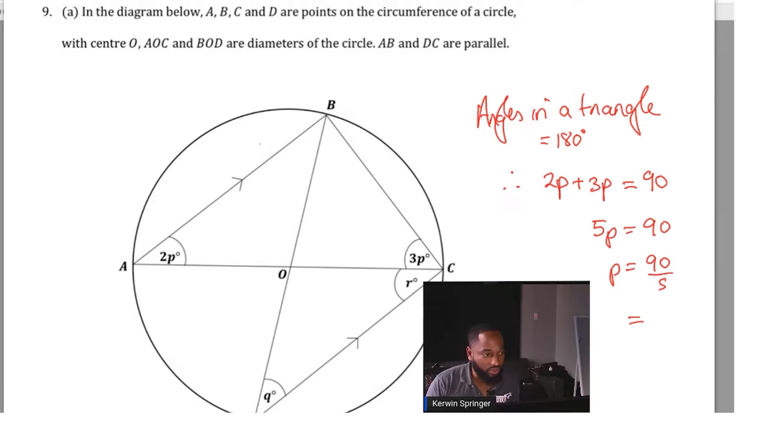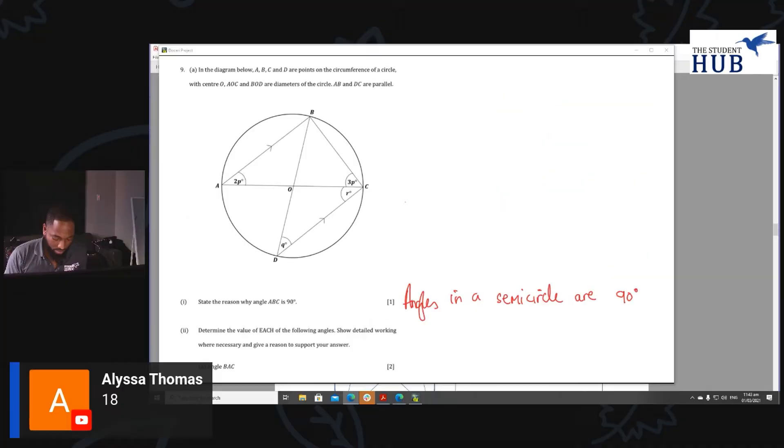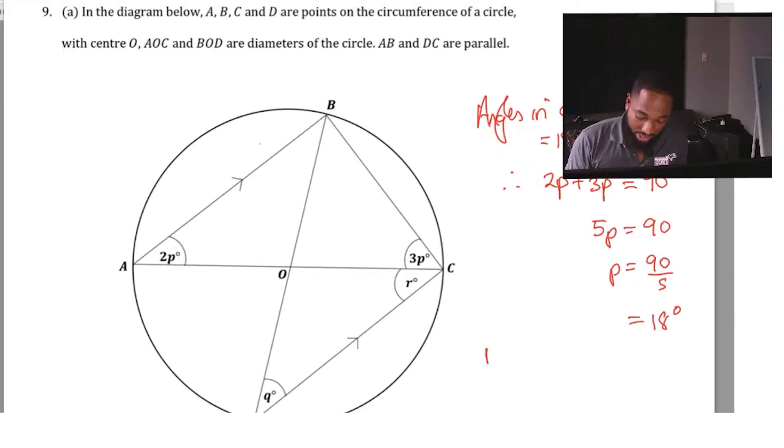How many times can 5 go into 90? 18 degrees. They didn't ask us to find the value of p, they asked us to find the angle BAC, which means BAC is equal to 2p, which we just figured out to be 18 degrees, so we have 36 degrees.